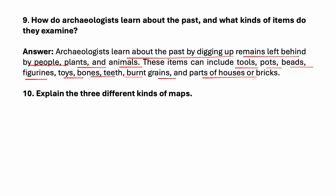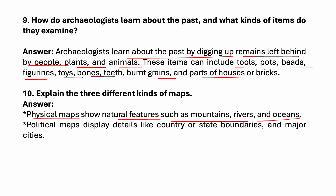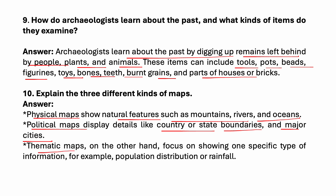Explain the three different kinds of maps. Physical maps show natural features such as mountains, rivers and oceans. Political maps display details like country or state boundaries and major cities. Thematic maps focus on showing one specific type of information, for example population distribution or rainfall.